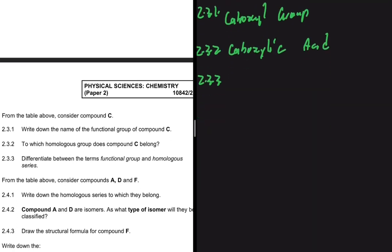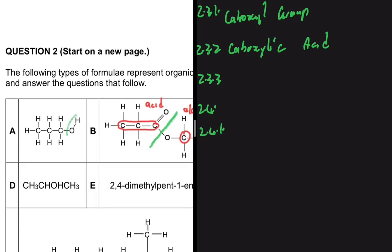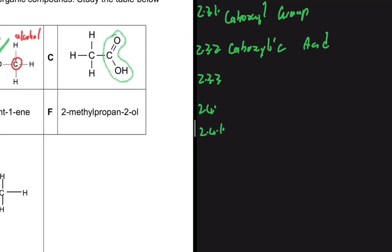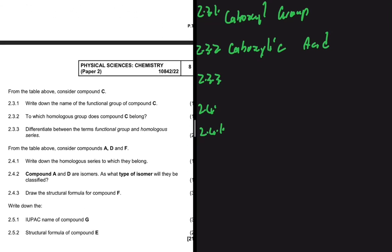For question 2.4, we consider compounds A, D, and F. The first question asks for the homologous series to which they belong. Compound A has an -OH group, which is the functional group of an alcohol. Compound D also has an -OH group, and compound F ends with '-ol.' So A, D, and F are all alcohols — the answer to 2.4.1 is alcohols.